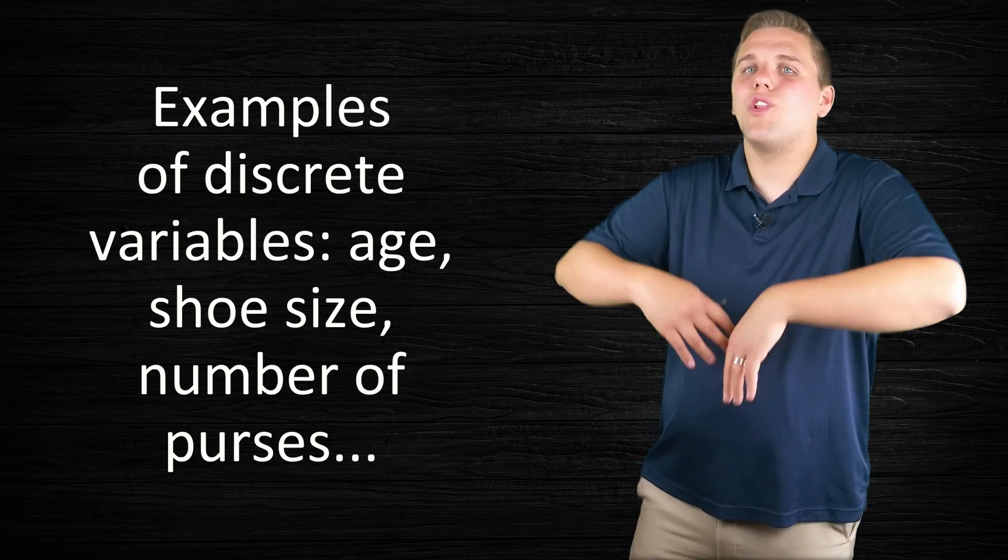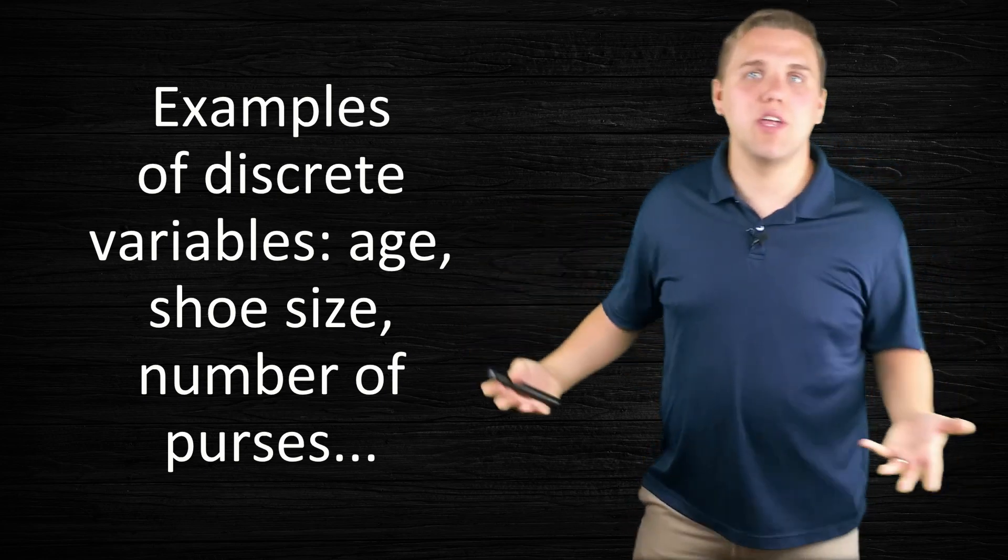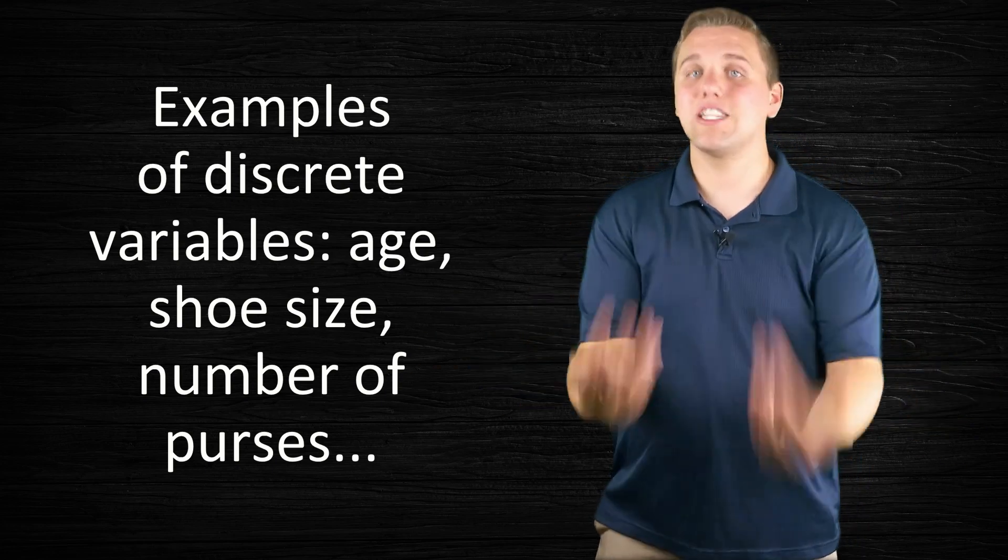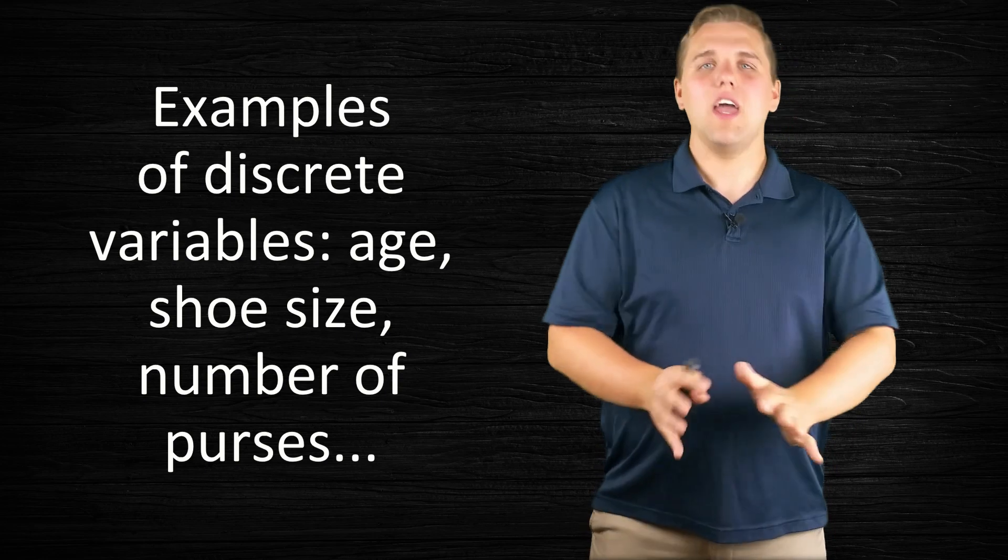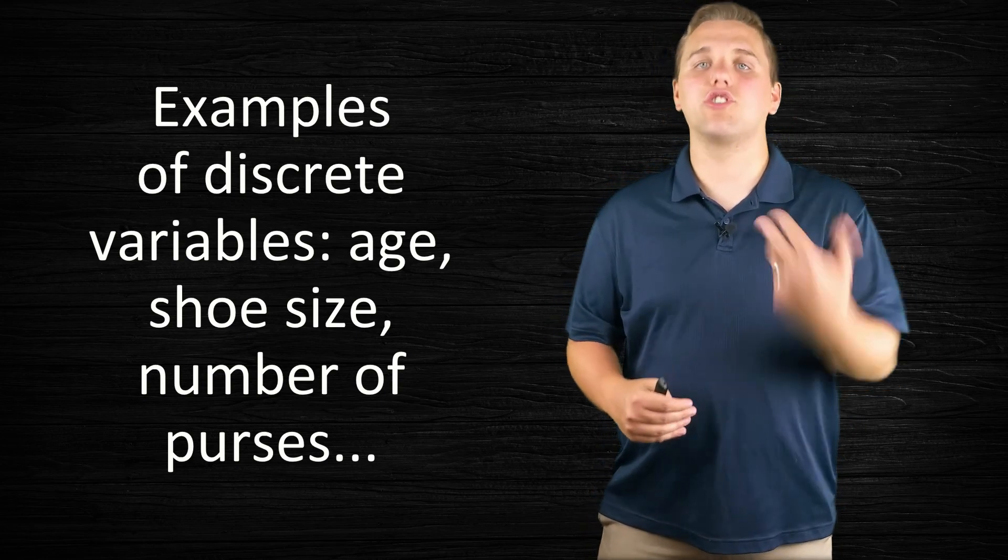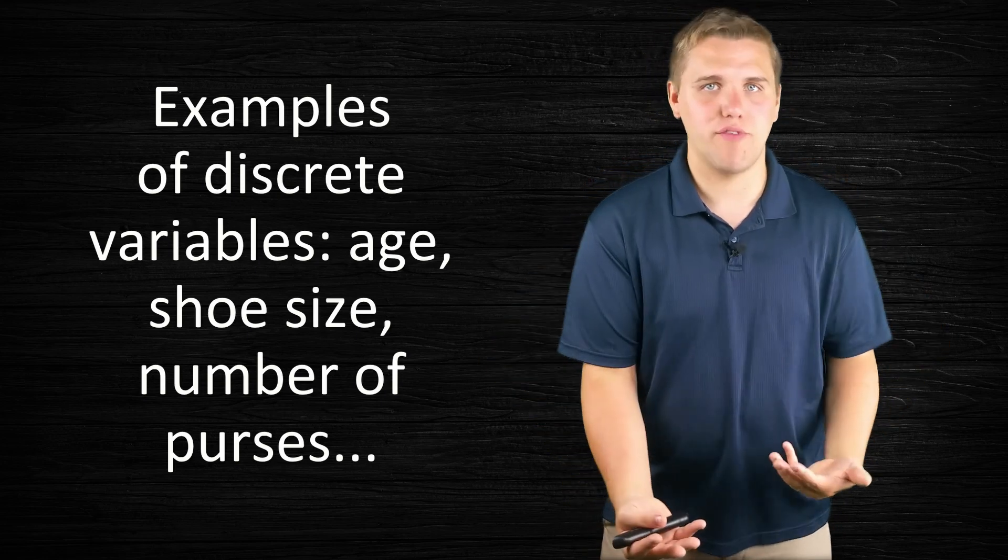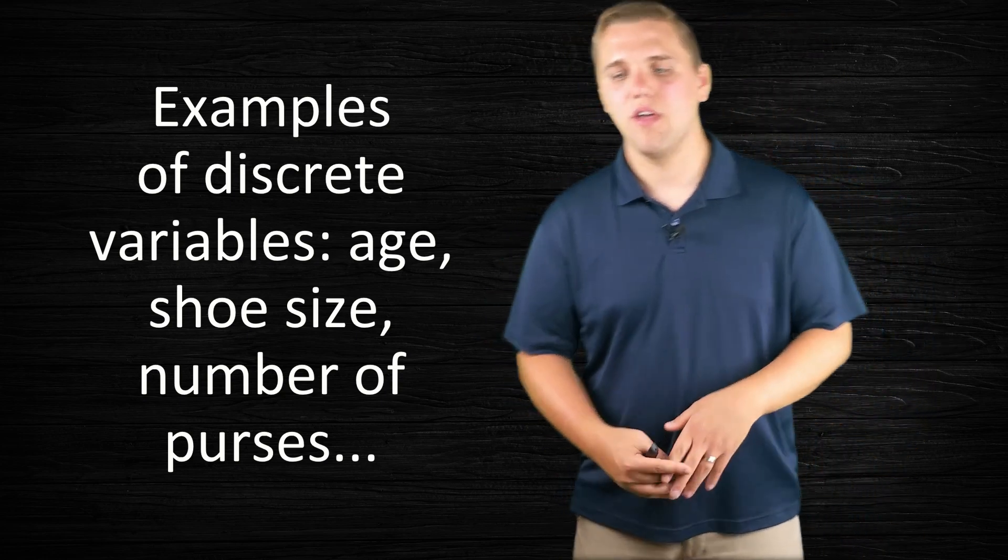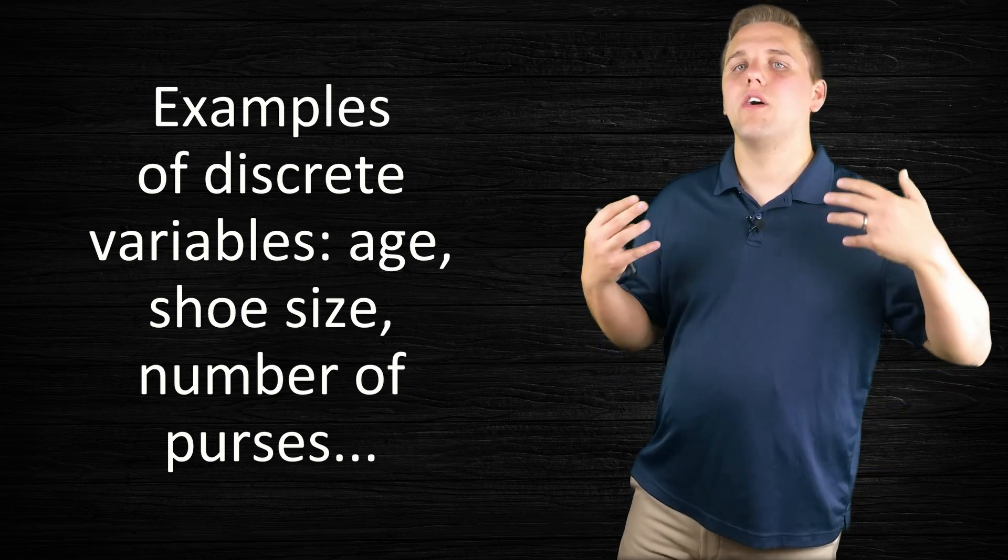Now in this example there's no real limit to how many purses you can have. Someone might have like a billion purses. So there are still actually an infinite number of options for the possible responses that someone can give, but you're still kind of limited in terms of what type of response you're going to give me. You're going to give me a discrete response because you're only going to give me an integer value, a whole number value, or a natural number in this case because you can give the number zero. So the number of purses is another example of a discrete variable.